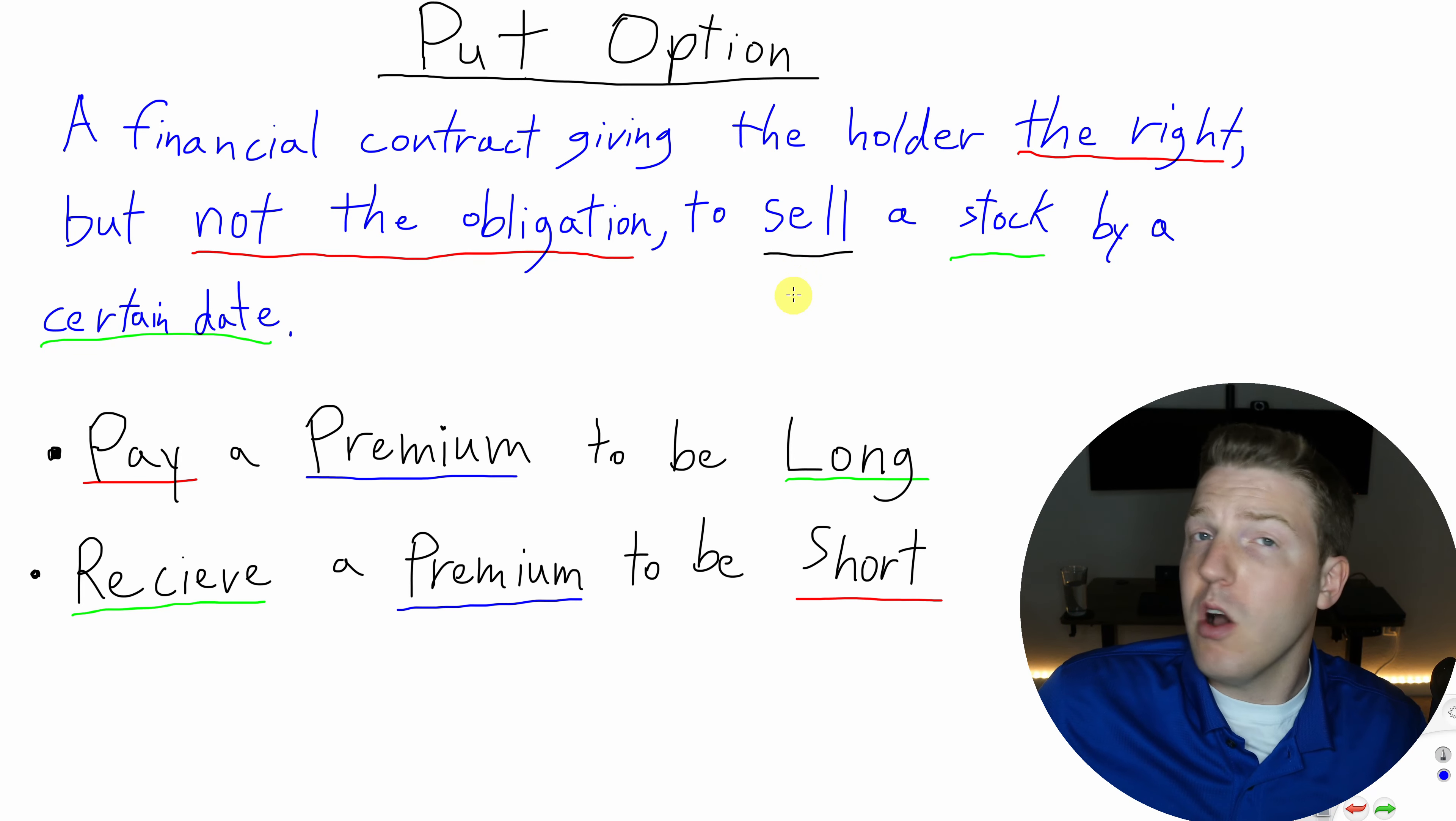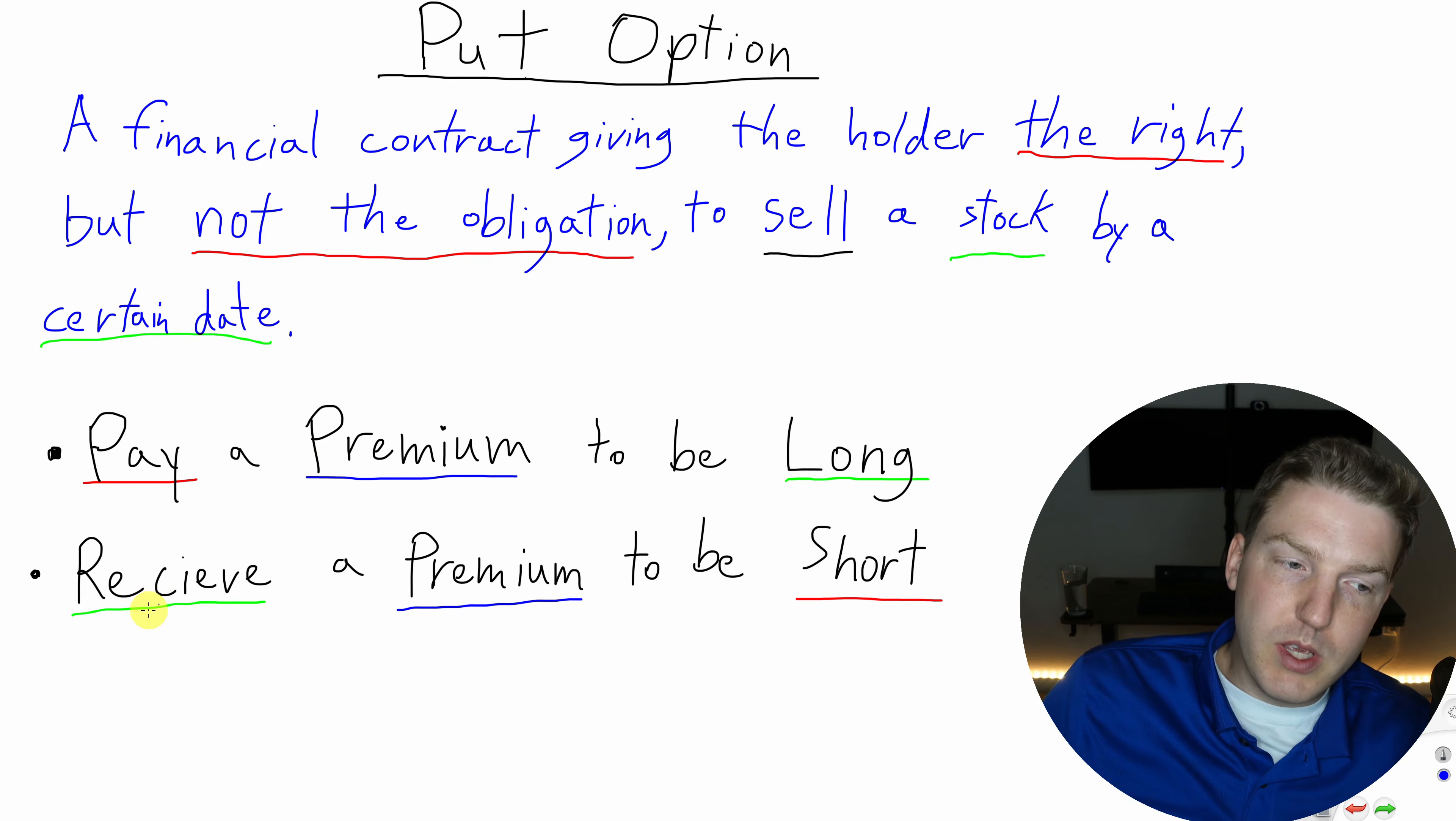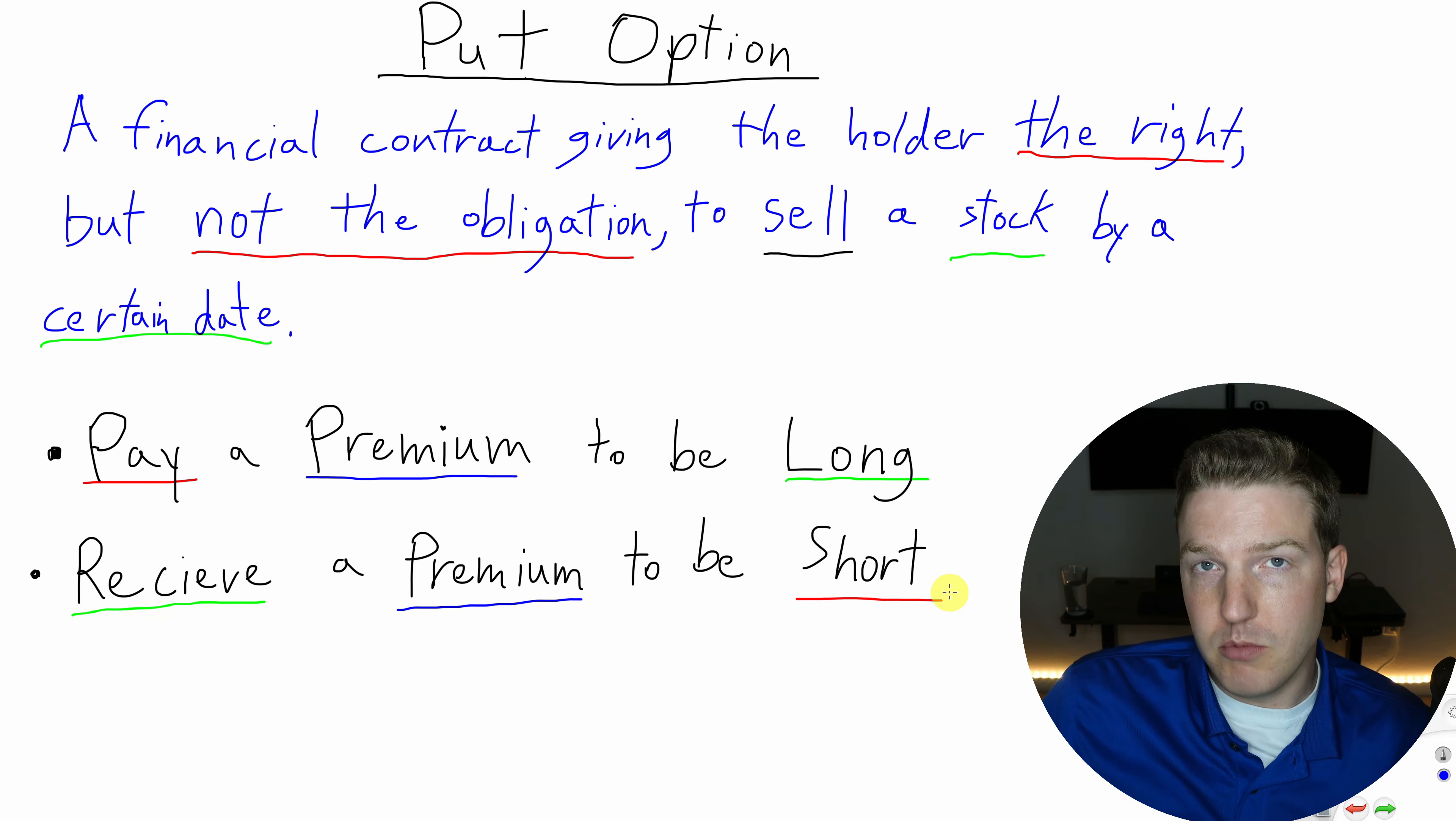So if I own a call option, I want the price to go up of the underlying stock. Whereas if I own a put option, if I'm long a put option, I want the price of that underlying stock to decline. And it's the same down here, so we can pay a premium to be long the put option, or we can receive a premium to be short the put option, where we're selling the put option.